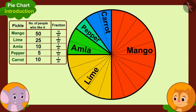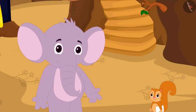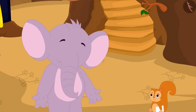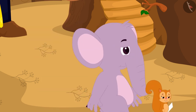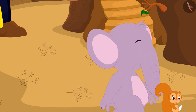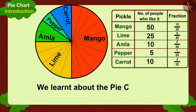Appu concludes they should start selling mango pickle first, and they decide to eat something since both are very hungry. The narrator wraps up: 'Children, in this video we learned about the pie chart. In the next video we will learn more about it through some interesting examples.'